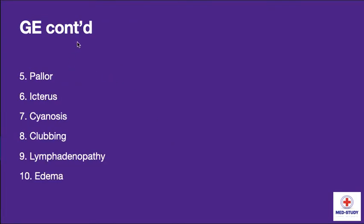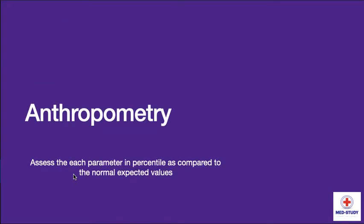Continuing with general examination, it includes pallor, icterus, cyanosis, clubbing, lymphadenopathy, and edema. Now going to the second part, which is anthropometry. We have to assess each parameter in percentile as compared to the normal expected values.